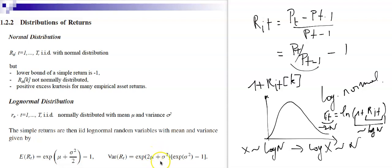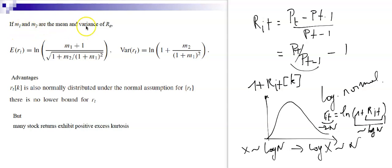Conversely, if m1 is the mean of R_{i,t} and m2 is the variance, we can write the mean and variance of the log return r̃_t as functions of m1 and m2. The lower-bound problem is resolved because log returns have support (−∞, +∞), matching the normal distribution's support.